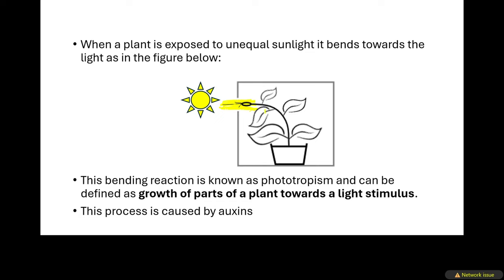Since the sunlight is striking only on one side, the plant will have a bending reaction — it will move towards the light. This is specifically unequal sunlight. It doesn't have to be sunlight specifically; it can be any type of light, as long as it is unequal, meaning the light is only exposed to one side of the plant. The plant will then bend towards that light.